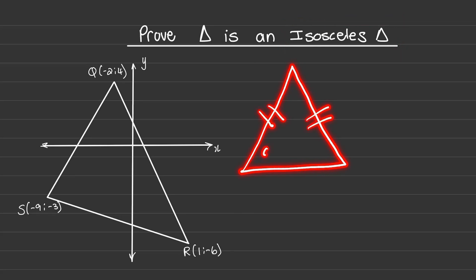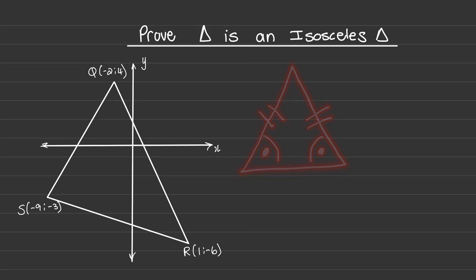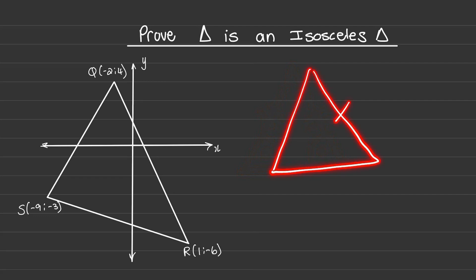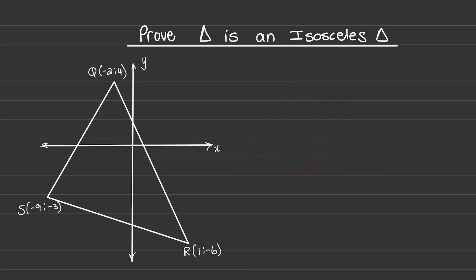We also know that the opposite angles are equal in size, but we have not yet learned any analytical geometry regarding angle sizes. So we can focus on the opposite lengths that are equal, and when we speak about lengths, we will use the distance formula.